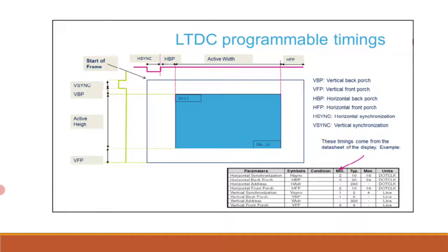VBP is the vertical back porch and VFP is the vertical front porch. HBP is the horizontal back porch and HFP is the horizontal front porch. HSync is horizontal synchronization and VSync is vertical synchronization. These timings come from the data sheet of the display. An example table shows minimum, typical, maximum values and units.